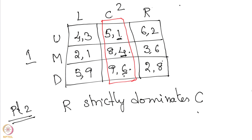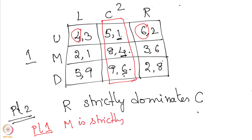With C eliminated, we look at the remaining columns L and R: payoffs 3, 1, 9 and 2, 6, 8 respectively — neither dominates the other. Now from player 1's perspective: if player 1 plays U, he gets either 4 or 6; if he plays M, he gets 2 or 3. Since 2 and 3 are certainly smaller than what he gets playing U, M is strictly dominated by U. So player 1 will never play M.